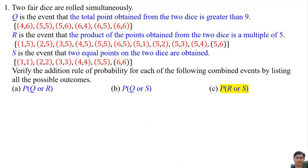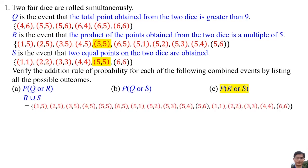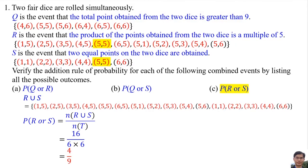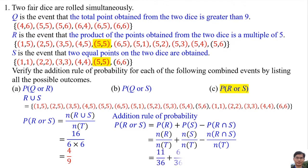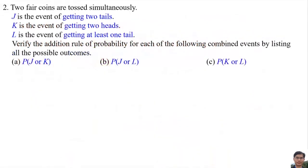For the probability of R or S, the common element for R and S is (5,5). R or S is R union S — we copy all elements in R and all elements in S except the common element (5,5). The probability of R or S is 4/9. The addition rule of probability also gives 4/9, confirming the result.